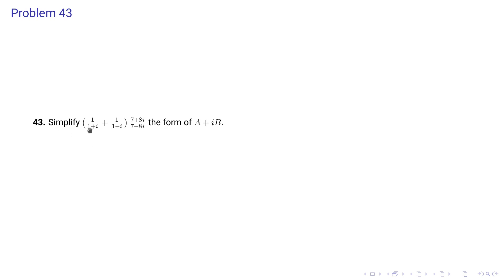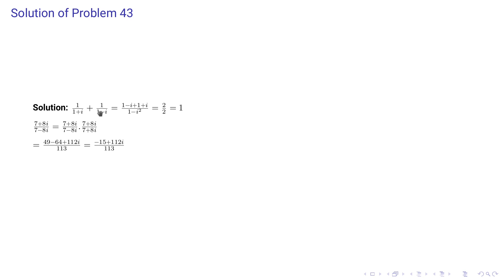Problem 43: simplify [1/(1+i) + 1/(1-i)] × (7+8i)/(7-8i) in the form a + ib. First, 1/(1+i) + 1/(1-i): taking common denominator gives (1-i + 1+i) / (1-i^2) = 2/2 = 1. So the bracket equals 1, simplifying the whole expression to (7+8i)/(7-8i).